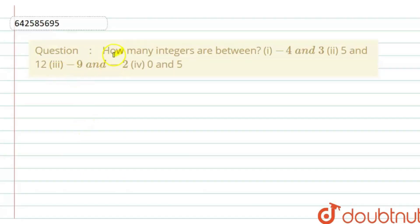Hello, so the question is: how many integers are there in between? The first part is minus 4 and 3, the second part is 5 and 12, the third part is minus 9 and minus 2, and the fourth part is 0 and 5.